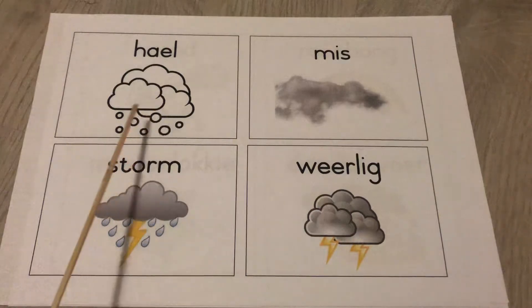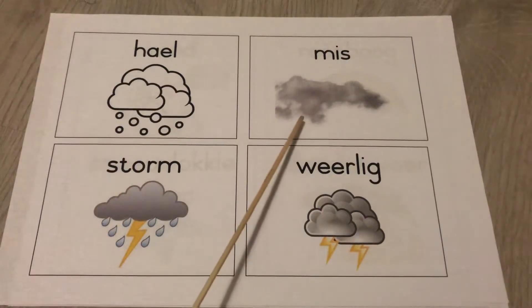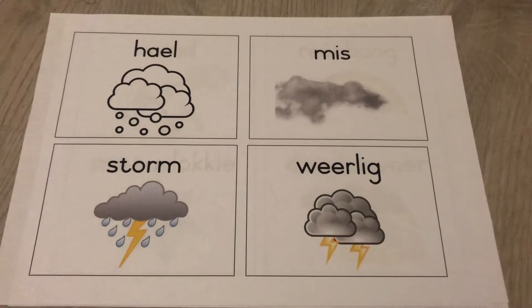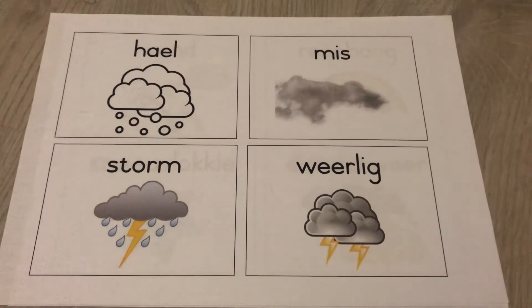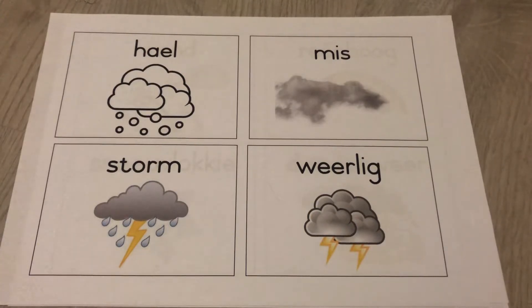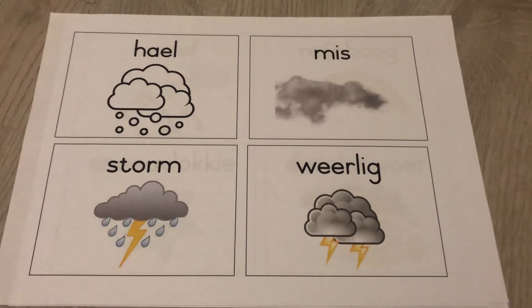Heil is hail. Mist is mist. Now, mist is when the clouds are really low, and when you get to school early in the morning — sometimes in the winter — or if you wake up and look outside and it's really misty. It looks like fog. That means the cloud is really low; you're looking inside of the cloud.